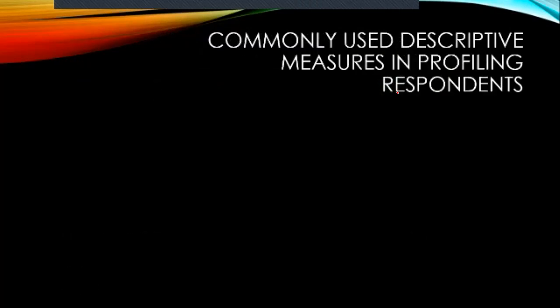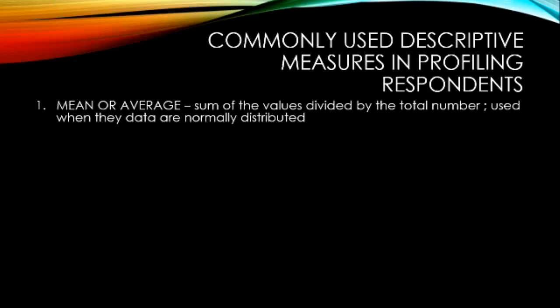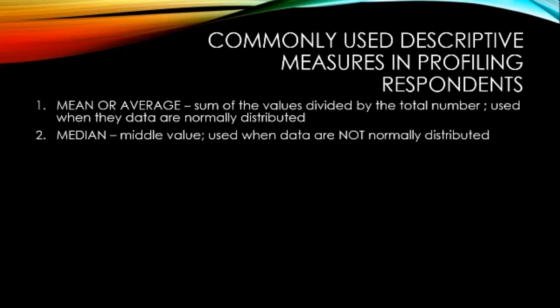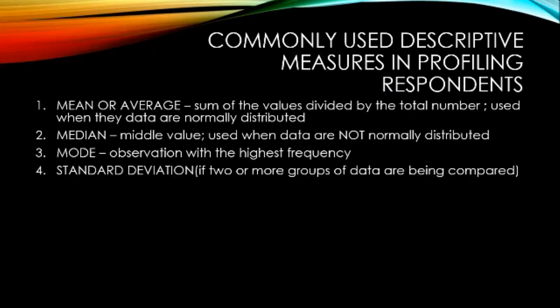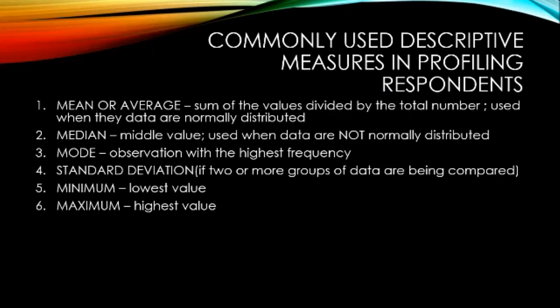The commonly used descriptive measures in profiling respondents are: the mean — sum of values divided by total number, used when data is normally distributed; the median — the middle value, used when data is not normally distributed; the mode — observation with the highest frequency; and standard deviation. We also obtain the minimum (lowest value) and maximum (highest value). The question is whether to use the mean or the median — this depends on whether the data is normally distributed.